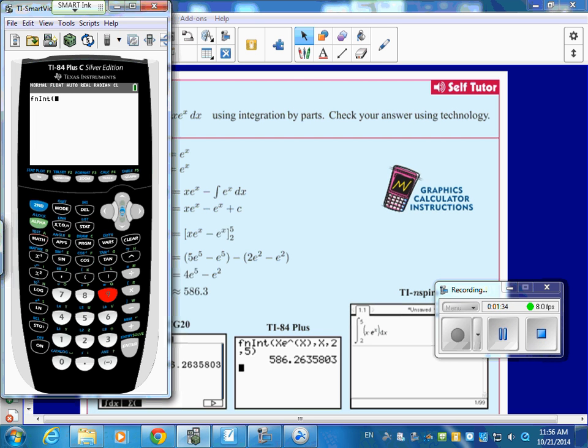Function integral. Put in your function, X times E to the X. And watch your parentheses. The X in the power is that. And then you have to put in a comma X. It's the programming of the ancient Texas Instrument programming.